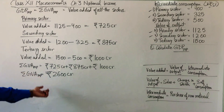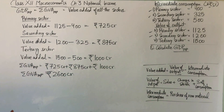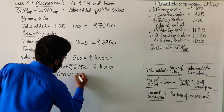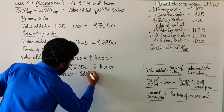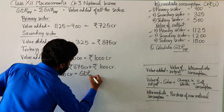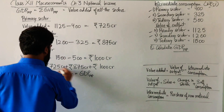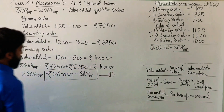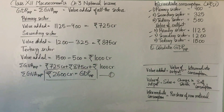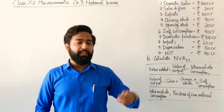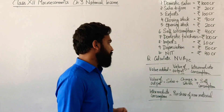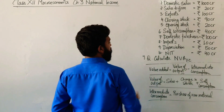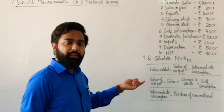Sigma GVA MP equals rupees 2600 crore, which is also equal to GDP MP. That is your answer. Is that clear, students? Now the last question for this video, the fourth one — we have to calculate the value of NVA FC.